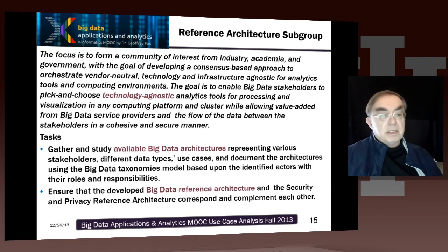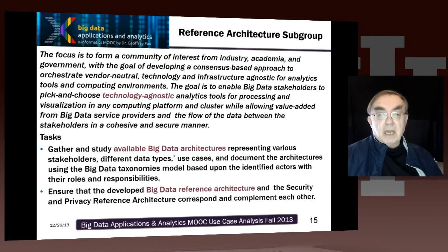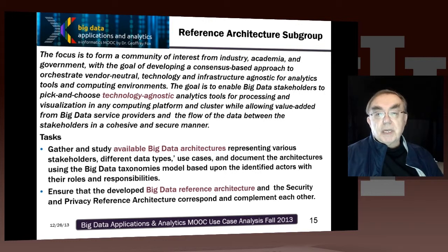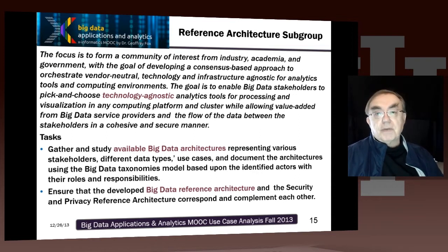It has a charter. It starts off with a generic charter about community of interest, covering industry, academia, and government, being agnostic as to everything — so we play no favorites. And then we want to produce the reference architecture that somehow allows competition between IBM, Apache, Microsoft, different research groups at universities, and different compute providers.